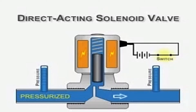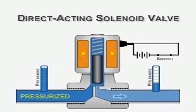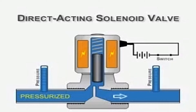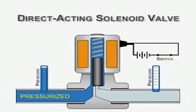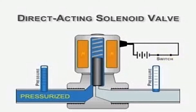When the coil is energized, it lifts the spring upward, which in turn lifts the plunger — similar to a plug and seat arrangement. The pressurized fluid from the upstream inlet port then flows into the downstream outlet port, pressurizing the downstream application. This is how a direct-acting solenoid valve works.